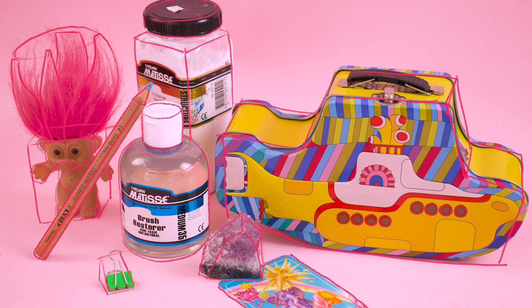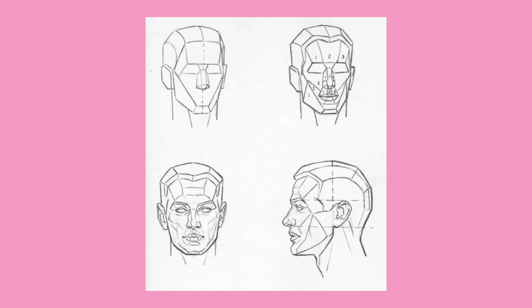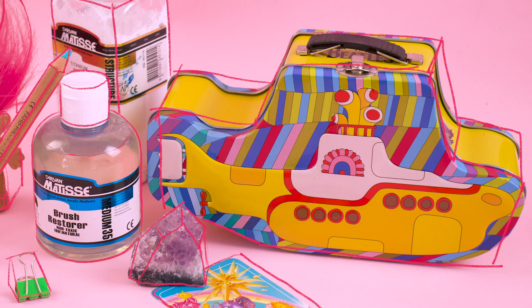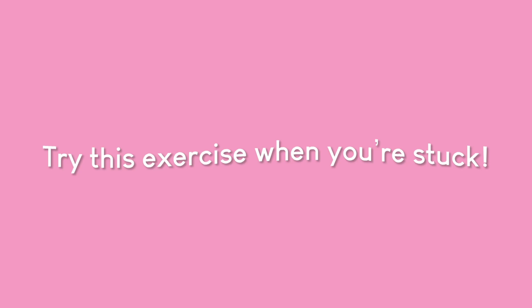Here is an example of a subject matter being broken down into shapes. You can see all the different varying shapes comprising it. An exercise I recommend: take a couple of pictures and draw an outline where you think the shapes are making up the subject matter. It'll really help you understand and break down how to draw something and make things look more dimensional.